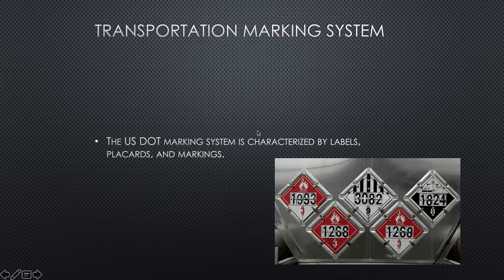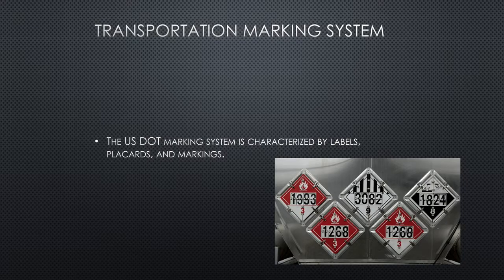The United States Department of Transportation marking system is characterized by labels, placards, and markings. They're used when materials are being transported within the US, and the same marking system is used in Canada. Placards are diamond-shaped indicators that identify a broad hazard class — whether it's flammable, poisonous, or corrosive. The United Nations North American coding system is the most common of the placards and shows four-digit numbers for identification of hazardous materials. You'd use the ERG to look those up.